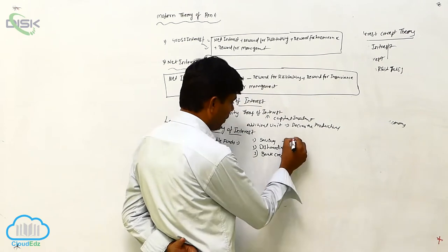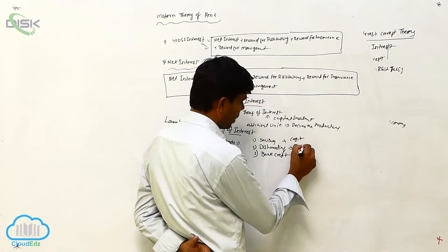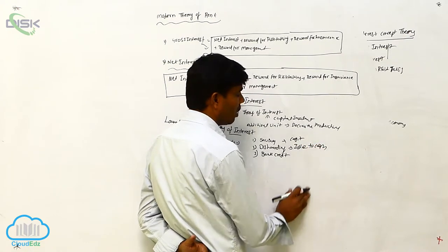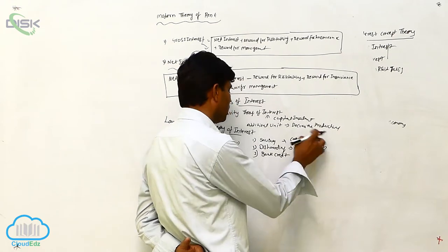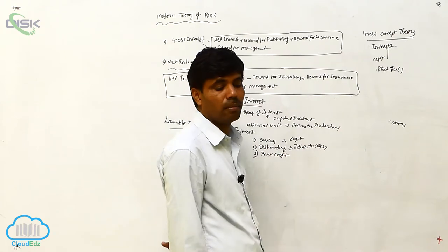Vice versa. In this capital we are using here idle time, we can use idle time to cash. Now these are the things, saving and dishoarding. Next is bank credit.